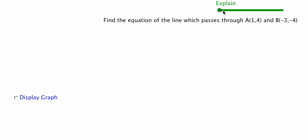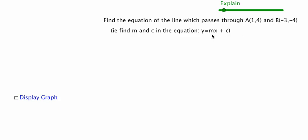We know that the equation of a line can be written as y equals mx plus c, where m is the gradient and c is the y-intercept. So we just need to find the values of m and c and we'll have the equation of the line.